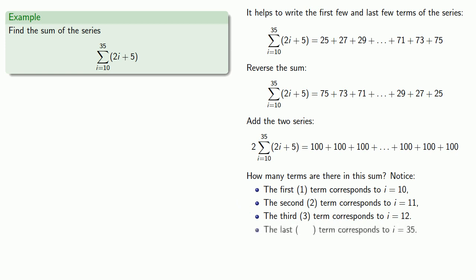And the last term corresponds to i equals 35. And so now we ask ourself what's the relationship between the term number and the value of i? And after staring at this for a while it seems that the term number is 9 less than the value of i.